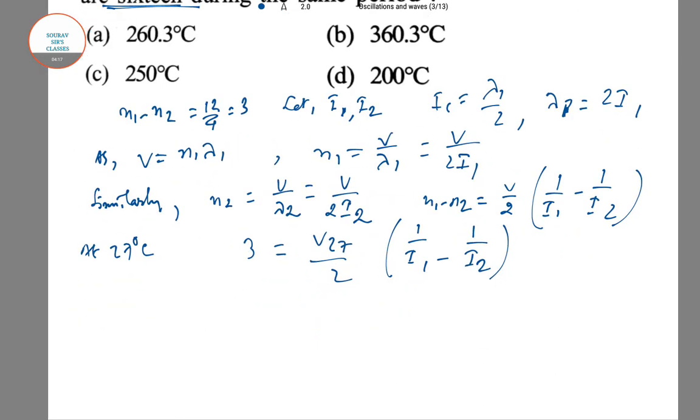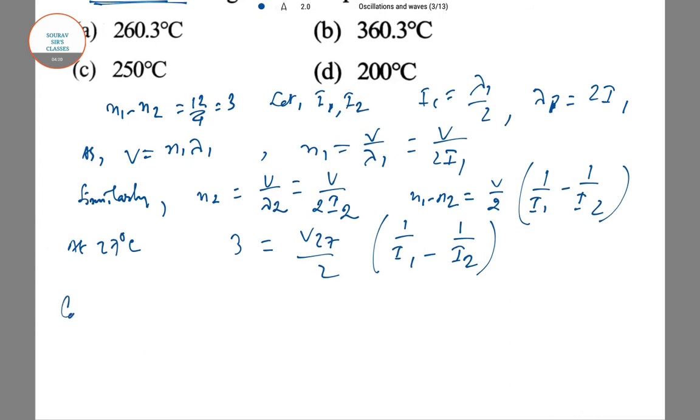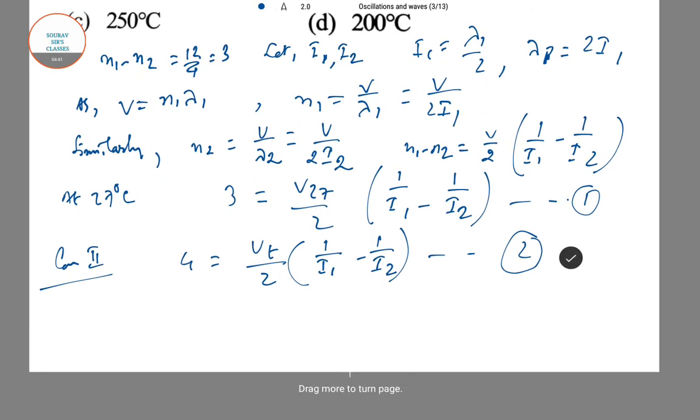In the second case, at 27°C, 3 = (v₂₇/2)(1/l₁ - 1/l₂). In case 2, 4 = (v_T/2)(1/l₁ - 1/l₂). These are the two cases, putting them as equations 1 and 2.